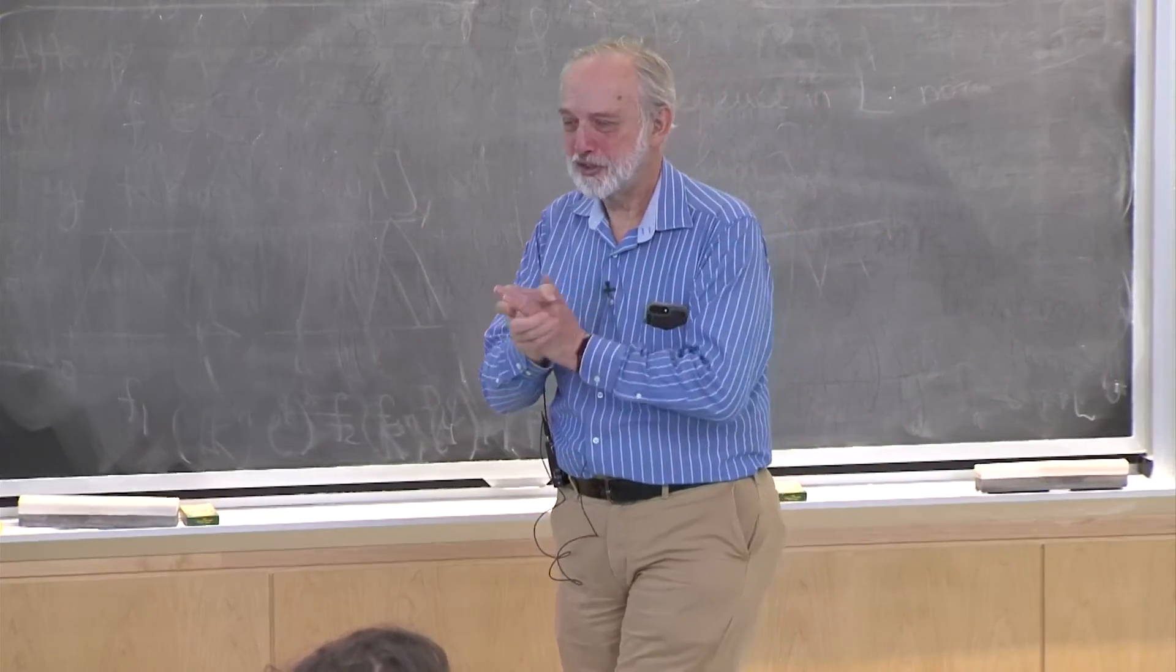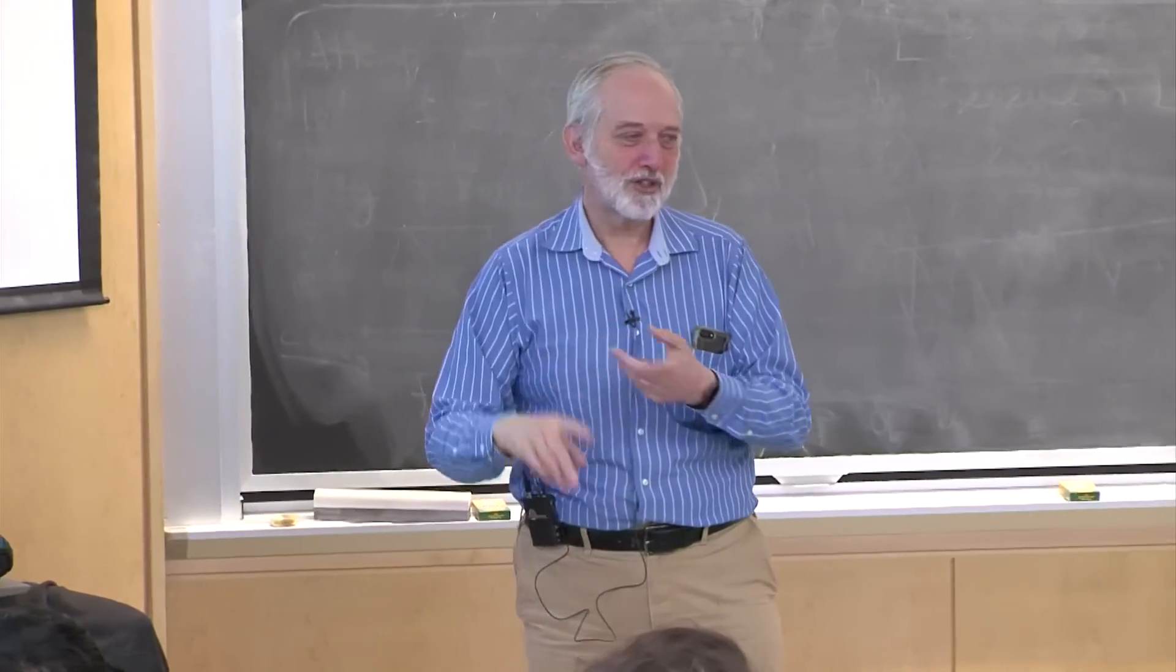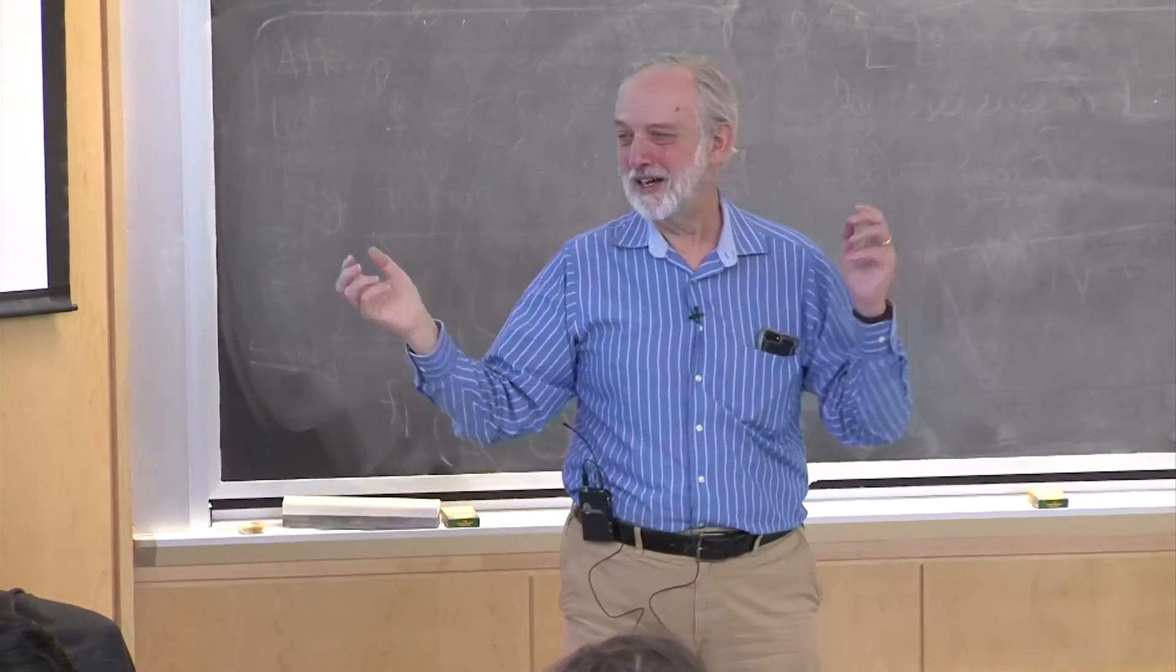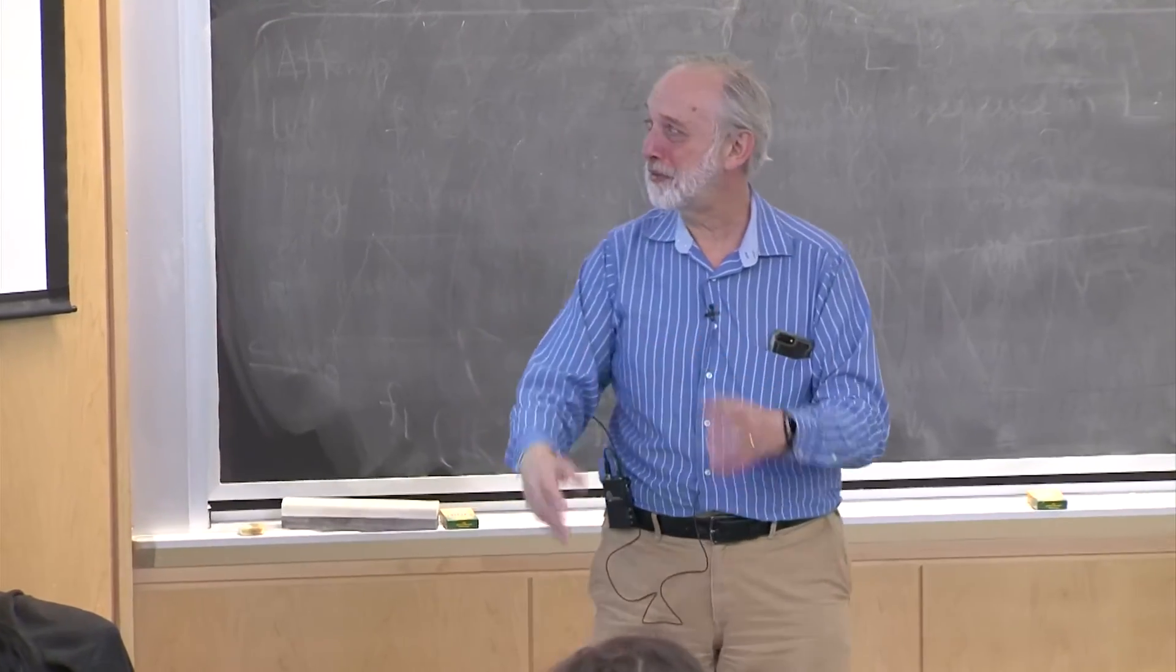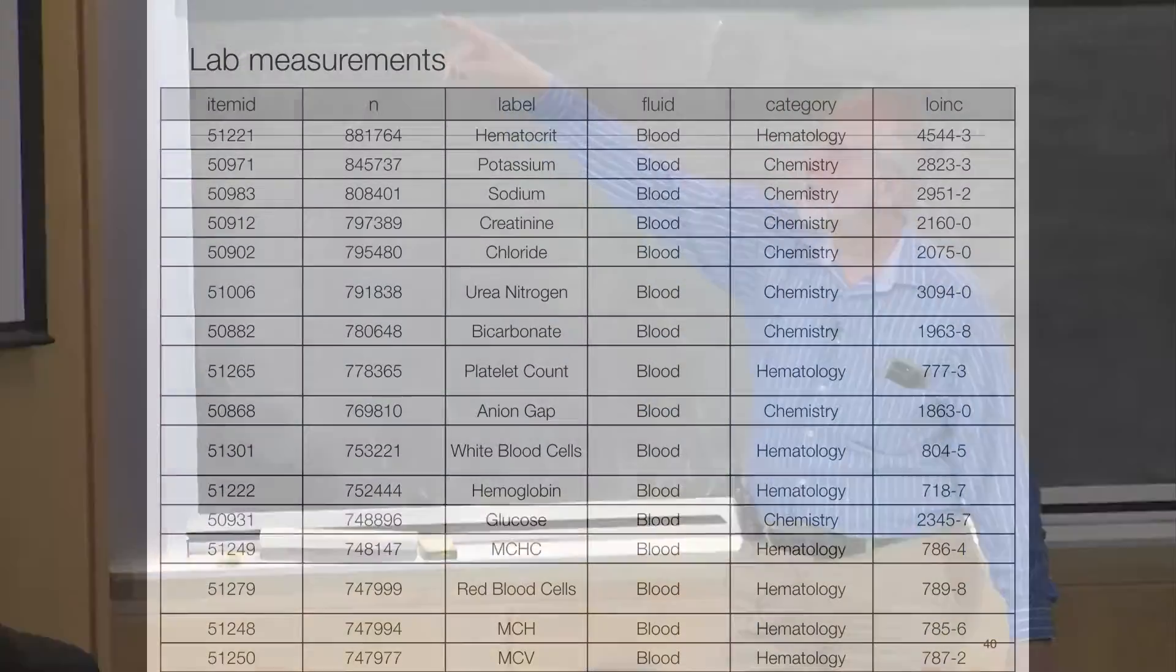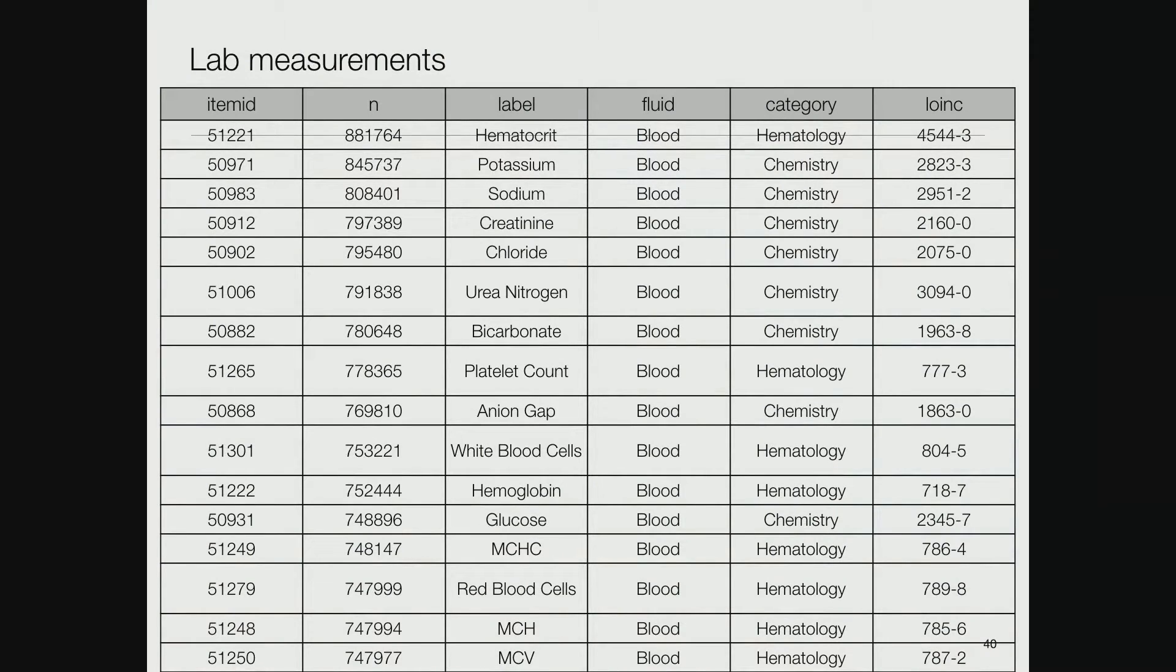Lab measurements. You send off a sputum sample, blood, urine, piece of your brain, something. They stick it in some goo and measure something. What are they measuring? It turns out hematocrit is the most common - how much hemoglobin is in your blood, very important for sick people. Second is potassium, then sodium, creatinine, chloride, urea nitrogen, bicarbonate. A long list of different things that can be measured.